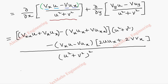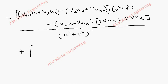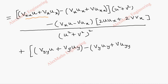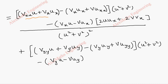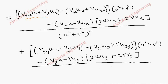For the second term, we copy the same structure but with respect to y: vyy times u plus vy times uy, minus (vy times uy plus v times uyy), times (u squared plus v squared), minus (vy u minus v uy) times (2u uy plus 2v vy), all divided by (u squared plus v squared) whole squared.